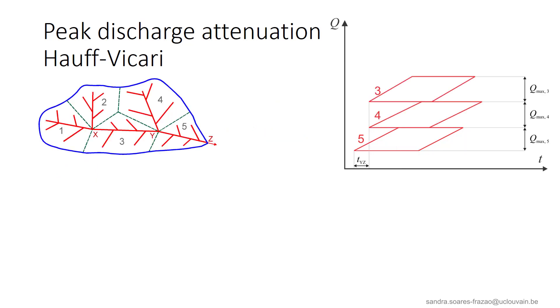We can do the same for subcatchments 3 and 4, taking into account the delay TYZ, which is the travel time from Y, the outlet of subcatchments 3 and 4, to Z, the outlet of the whole catchment.